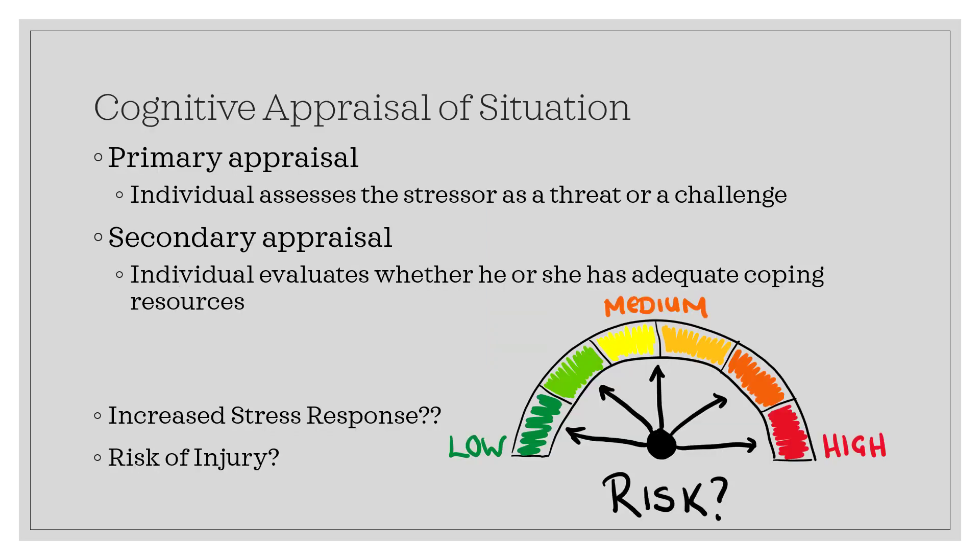The cognitive appraisal of a situation. When an individual encounters a stressful situation, they cognitively appraise whether they perceive it as a threat or as a challenge — often referred to as a primary appraisal. If the individual assesses the situation as a threat, they next evaluate whether they have an adequate resource to deal with the situation, also referred to as a secondary appraisal. If the individual perceives the situation as a threat and does not have the tools to handle it, then they will have an increased stress response, leading to increased risk of injury.